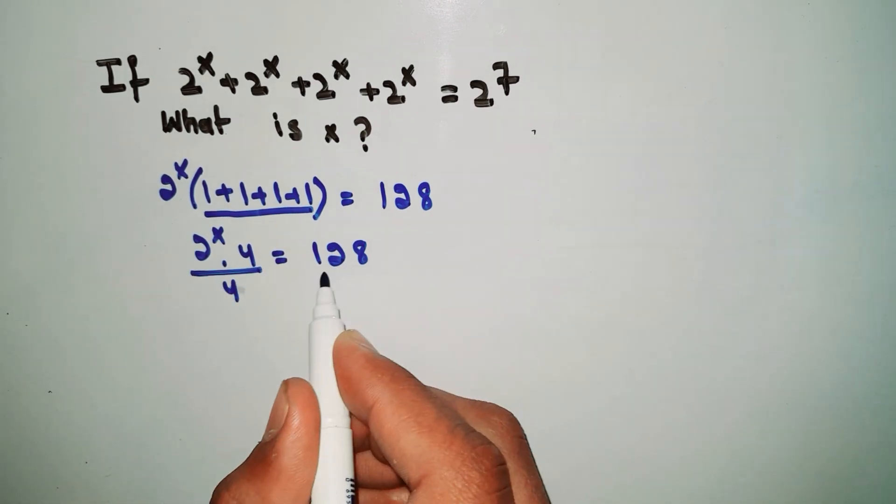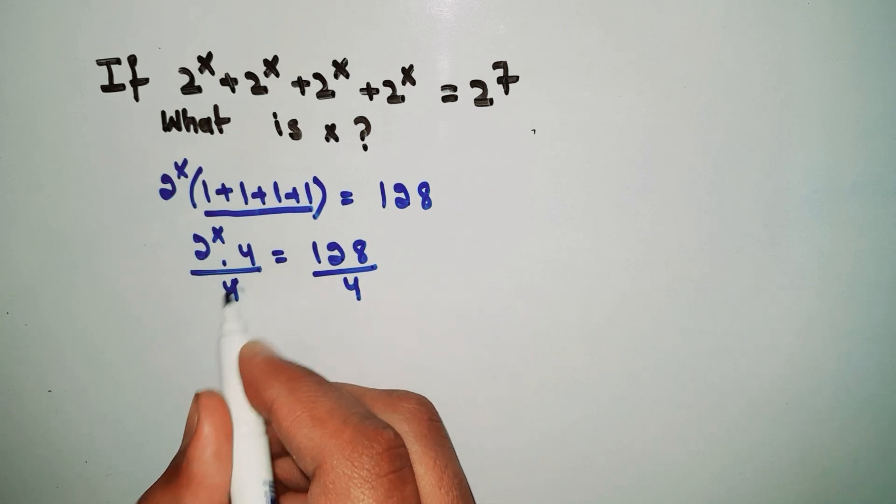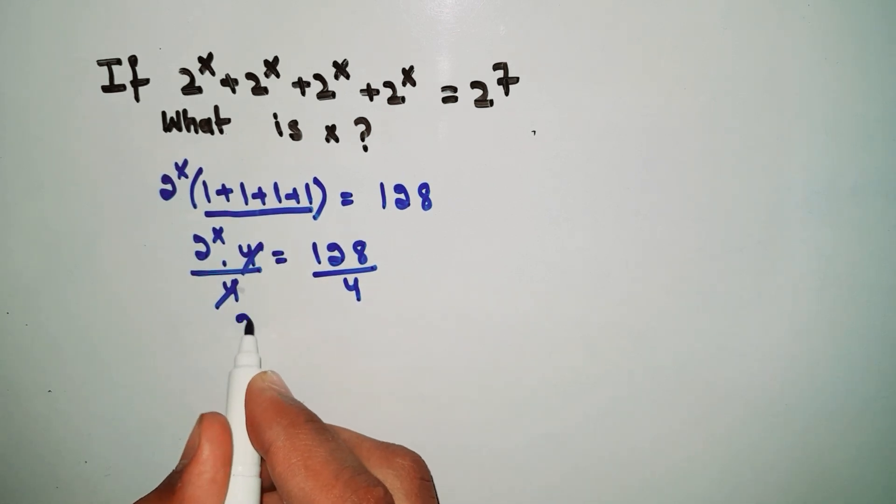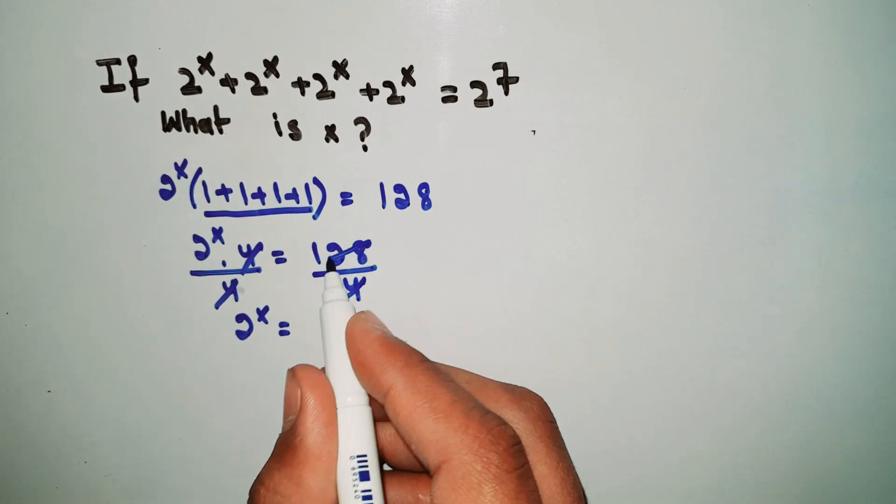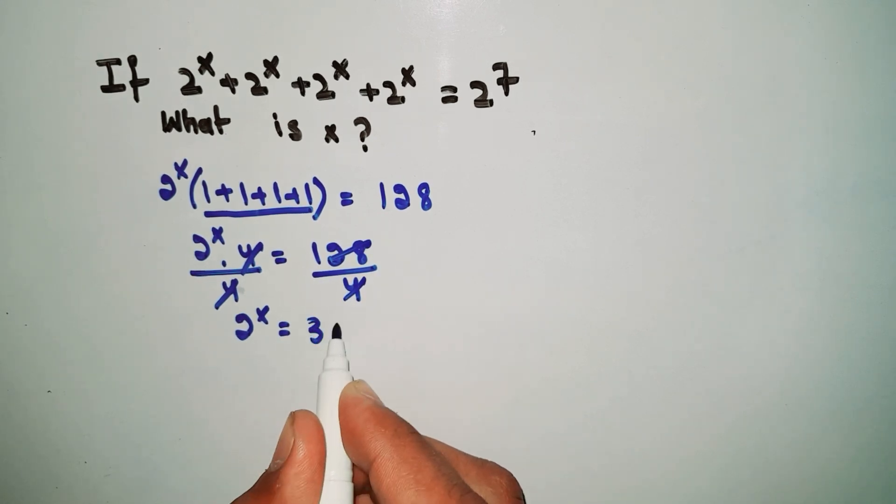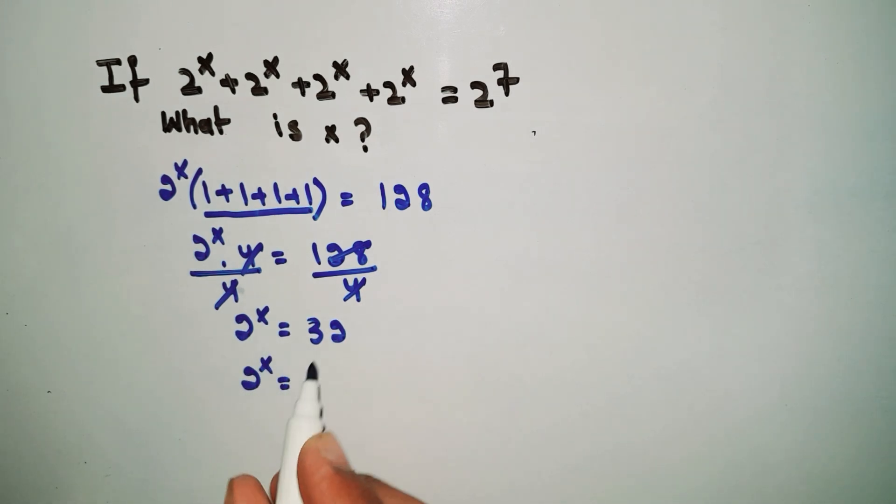Divide this side and also divide this side, so 4 and 4 cancel. 2^x equals 128 divided by 4, which equals 32. So 2^x equals 32.